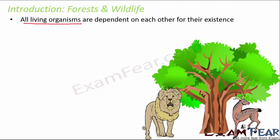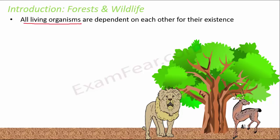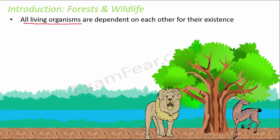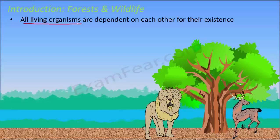So we see that animals are interdependent on each other because no one can survive without food. But not only this — a plant also needs soil from where it gets nutrients, water, and air for its survival. So living organisms not only depend on each other but also depend on non-living components in the environment.